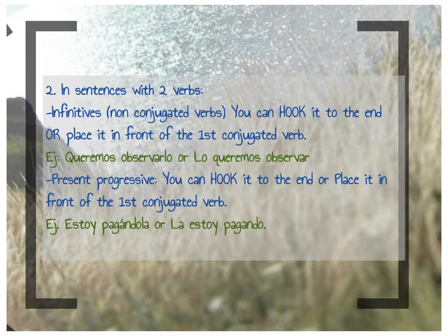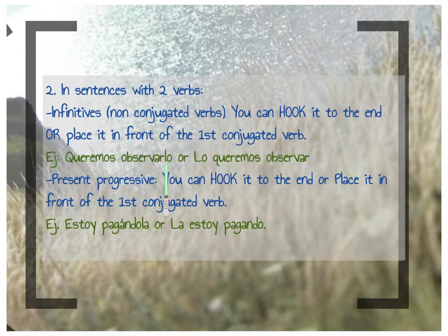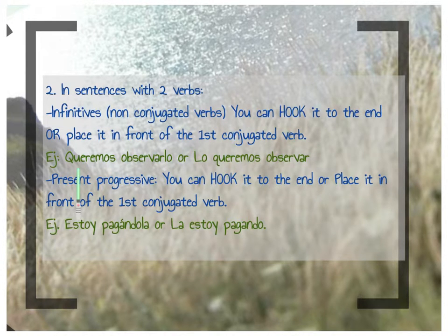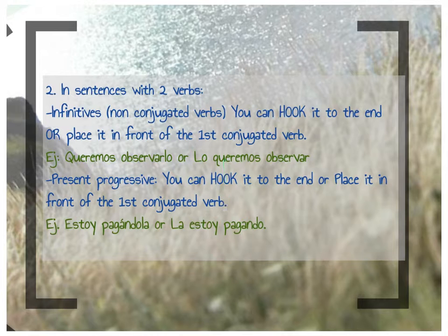With two verbs — we have a conjugated verb followed by an infinitive. You can take your DOP and attach it right onto the end of the infinitive, or you can put your DOP right before the first conjugated verb, just like we've always done, and put your infinitive behind. I prefer the first way because it reads straight across. So 'queremos observarlo' — we want to observe it. When you have two verbs, you get a choice: hook it onto the infinitive, or place it before the first conjugated verb.